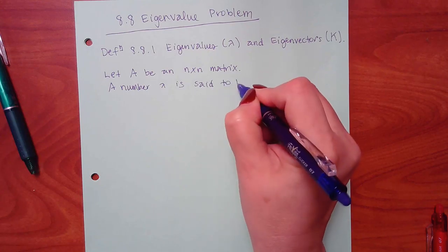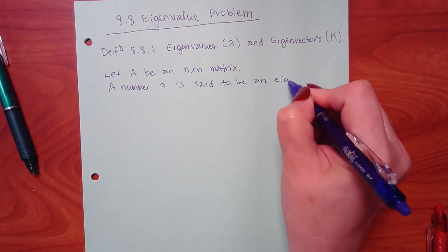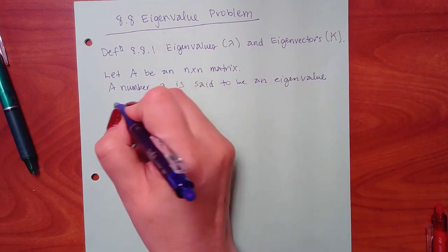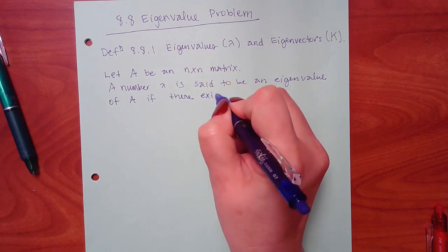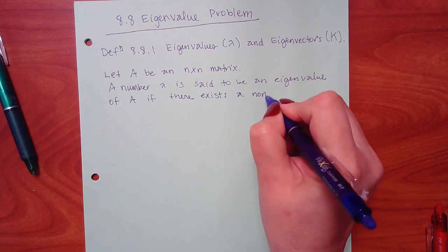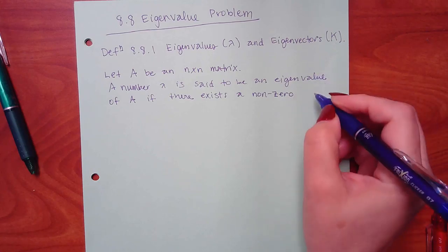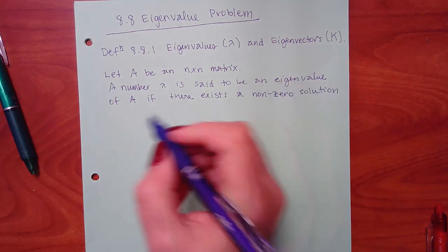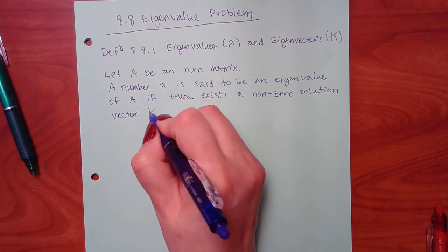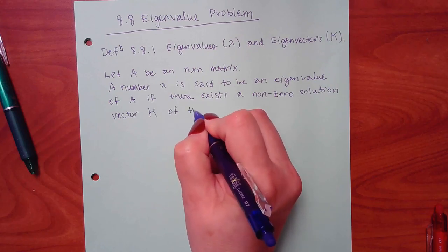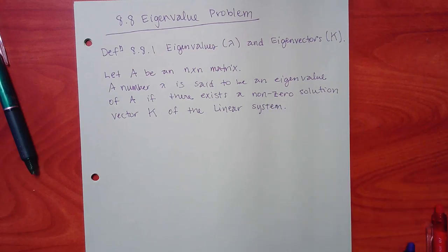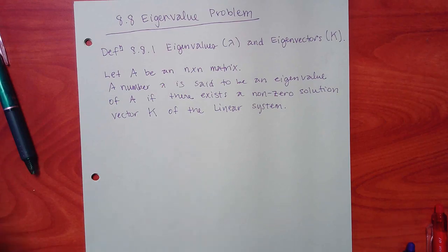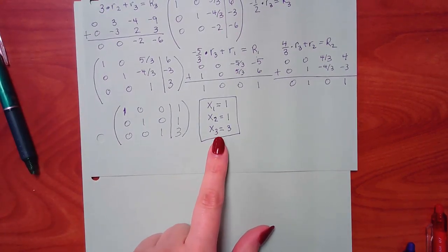So that's the A they're referring to. It says a number — and that's just the word A, not this matrix A, be careful — a number lambda is said to be an eigenvalue of A if there exists a non-zero solution vector, capital K, of the linear system.